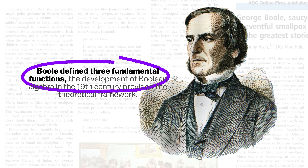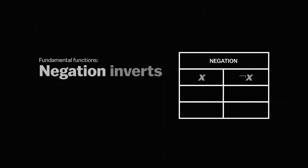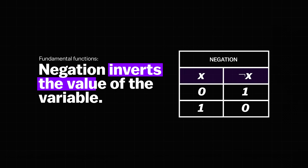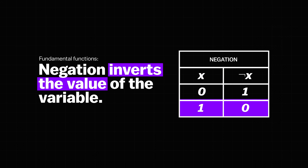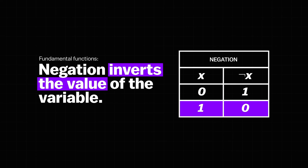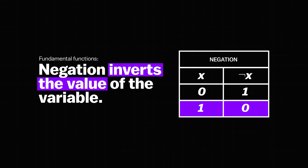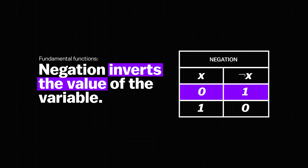Boole defined three fundamental functions. Negation inverts the value of the variable: if x is equal to 1, then negated x is 0; if x is 0, then negated x is 1.